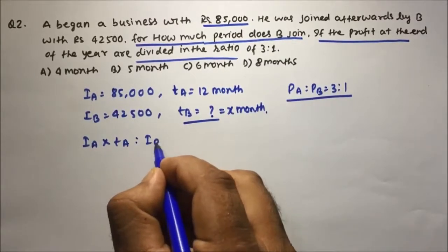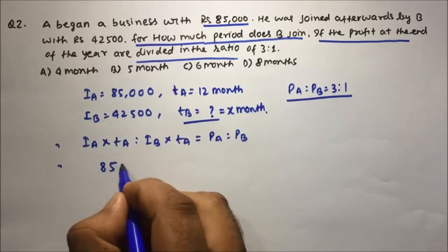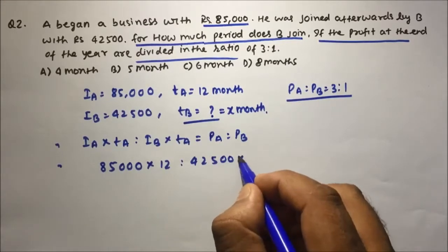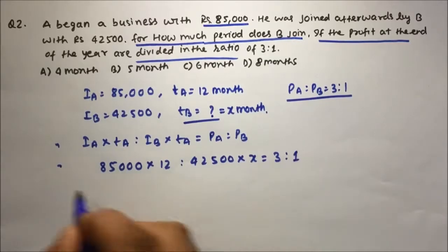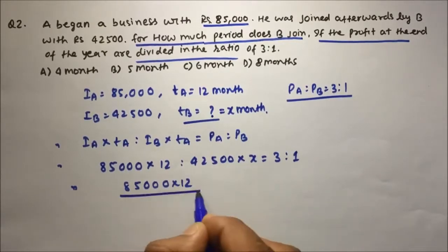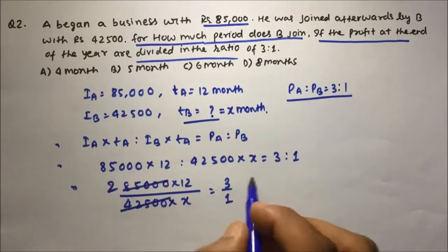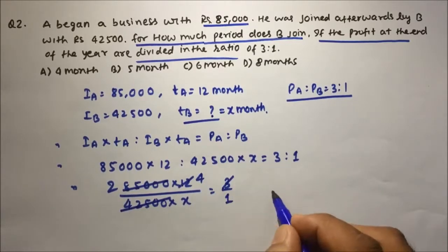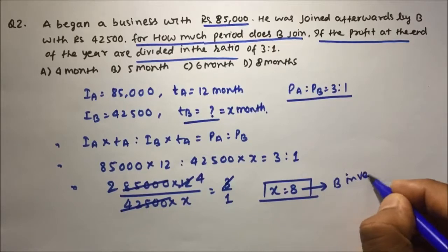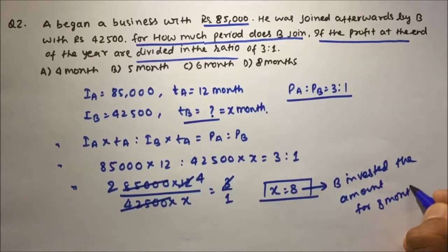This is a similar question to question one. Investment multiplied by time, to investment multiplied by time, equals the profit ratio. Investment of A is 85,000 into 12 months, and for B it is 42,500 into x months, with profit ratio 3 is to 1. Simplifying: 85,000×12 divided by 42,500×x equals 3/1. This gives 2×12 divided by x equals 3, so x equals 8. B invested for 8 months.